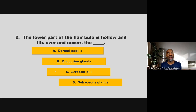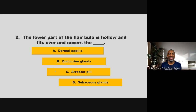The lower part of the hair bulb is hollow and fits over and covers the blank. Is it dermal papilla, endocrine glands, erector pili, or sebaceous glands? If you chose A, dermal papilla, you are correct.